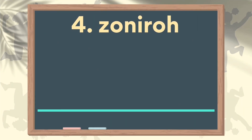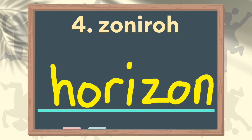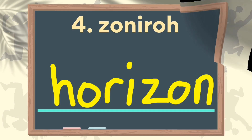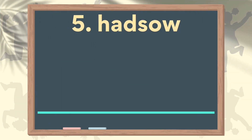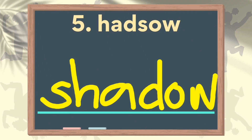Number four. We have the letters z, o, n, i, r, o, h — and the correct answer is horizon. Very good! Number five. We have the letters h, a, d, s, o, and w — and you can form the word shadow. Good job!